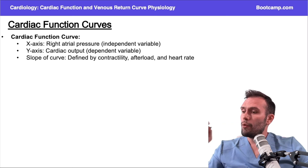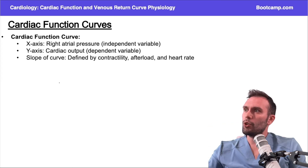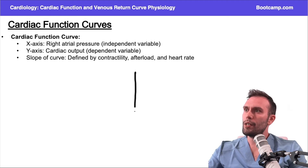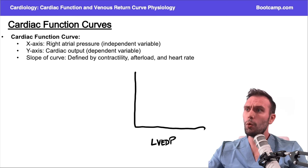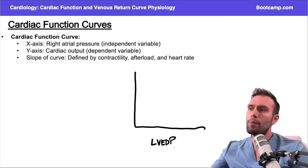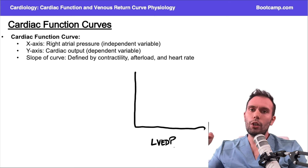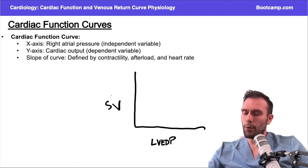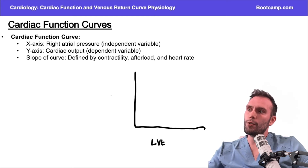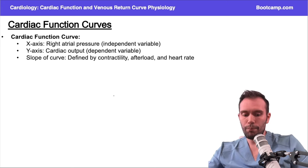Let's start off with the cardiac function curve. If you remember when we did the Frank-Starling curve, we had left ventricular end-diastolic pressure, or left ventricular end-diastolic volume — essentially some marker of preload — on the x-axis, and on the y-axis we had stroke volume. So that's the Frank-Starling curve: the relationship between preload and stroke volume.